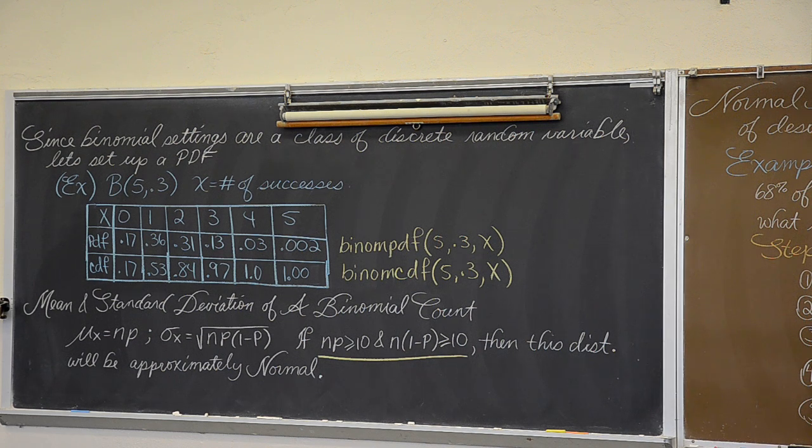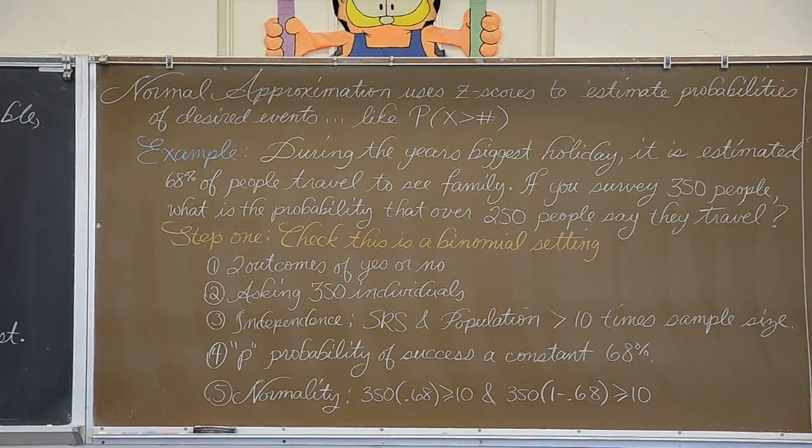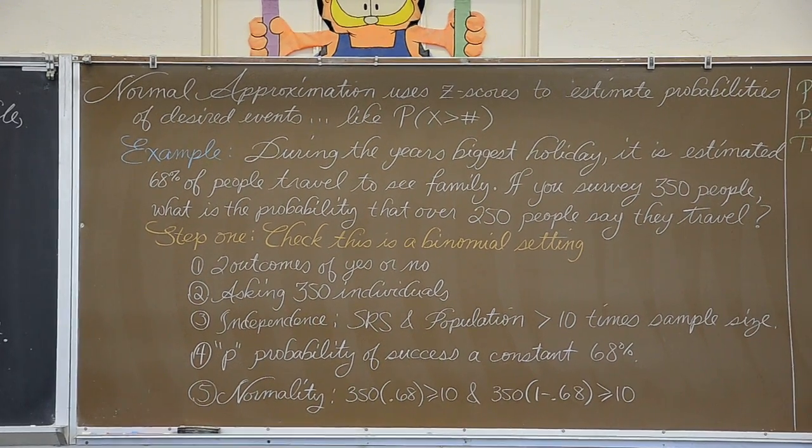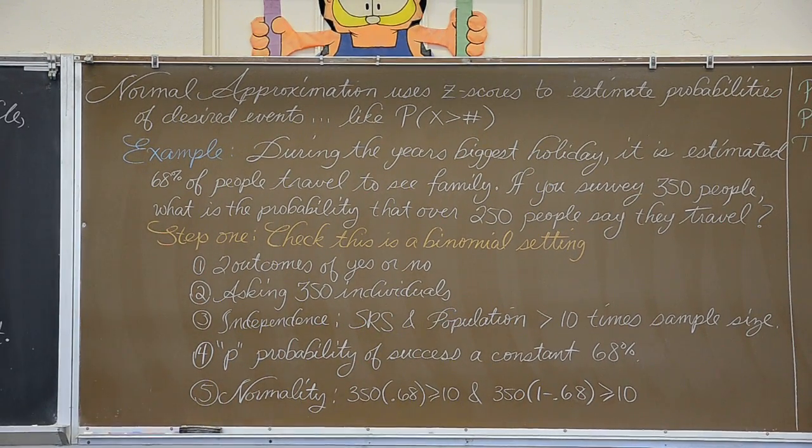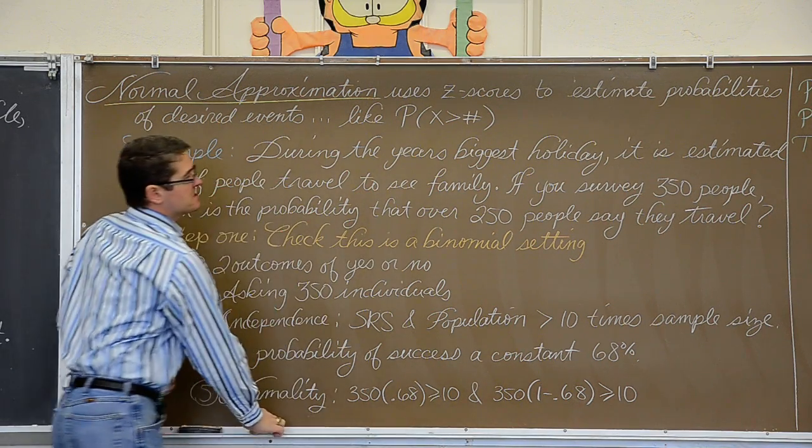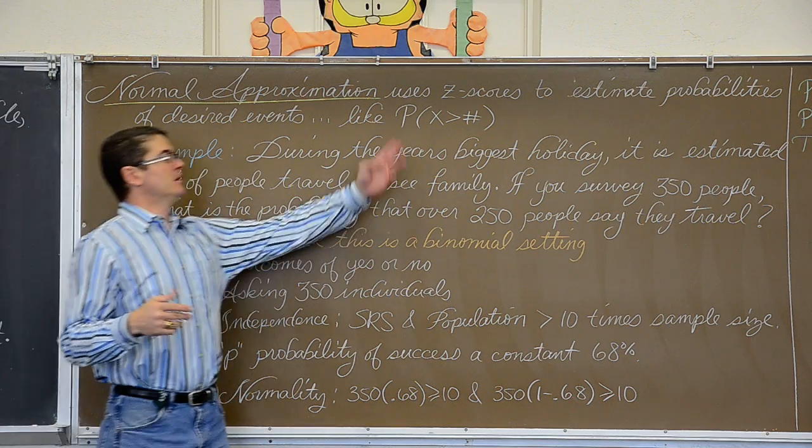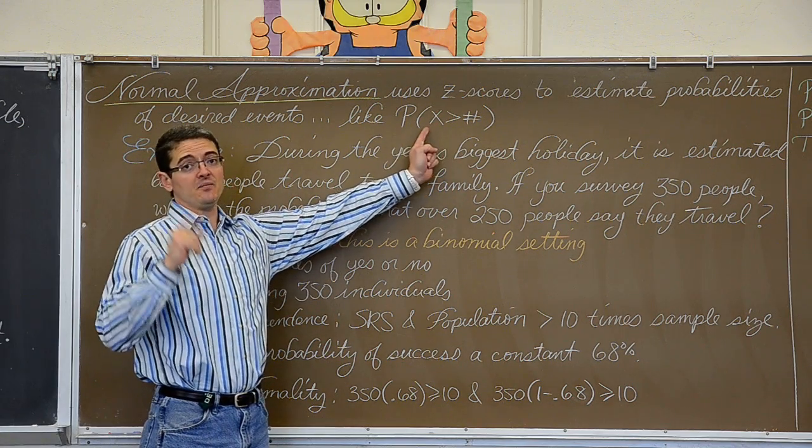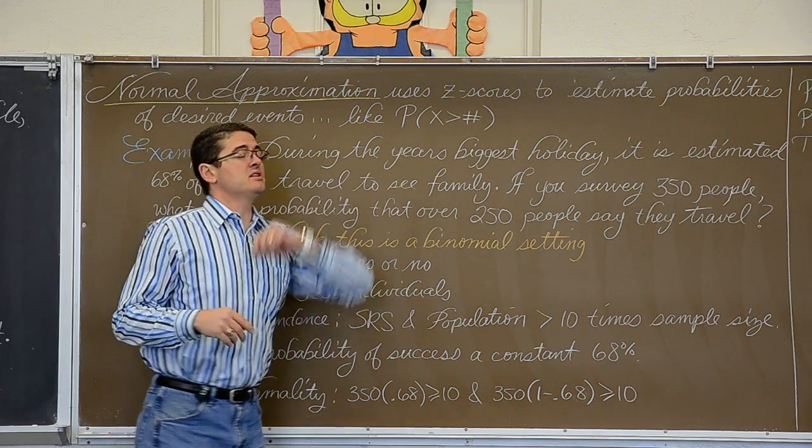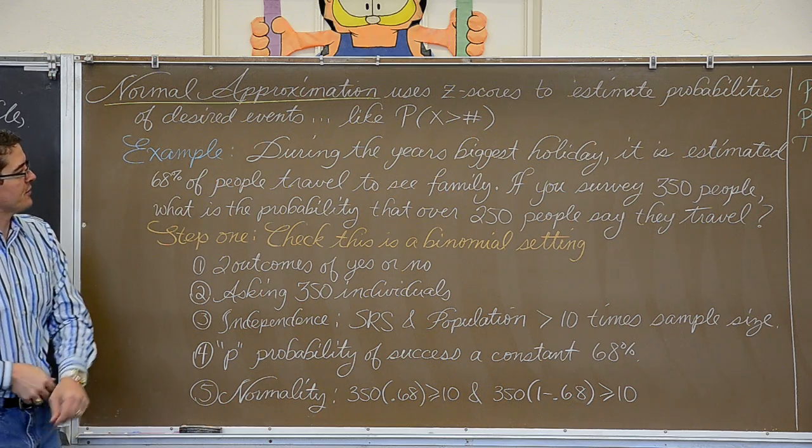Boom! There we go. Okay, normal approximation uses z-scores to estimate probabilities of desired events, like the probability that x, again, number of successes is greater than a number, or less than a number, or whatever. So our example we are going to walk through now.